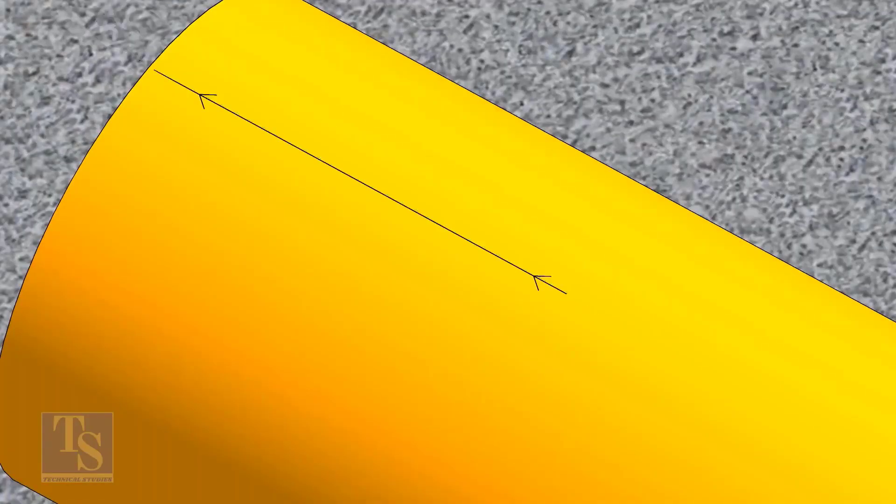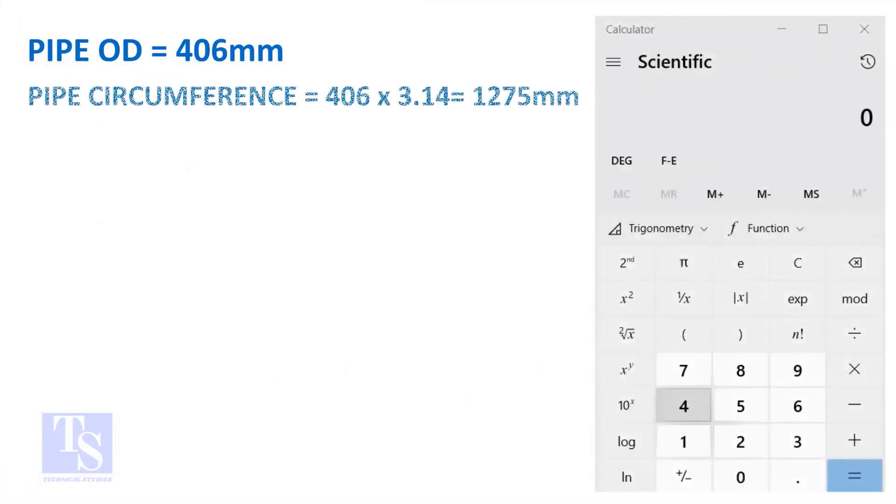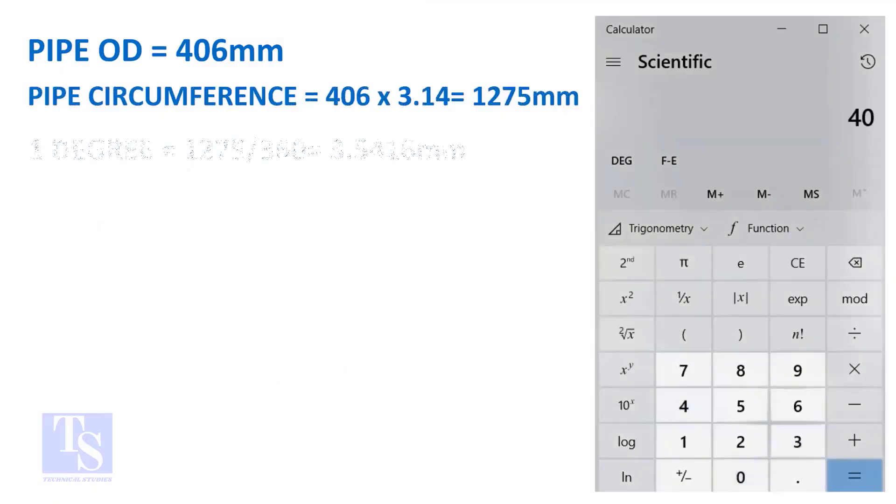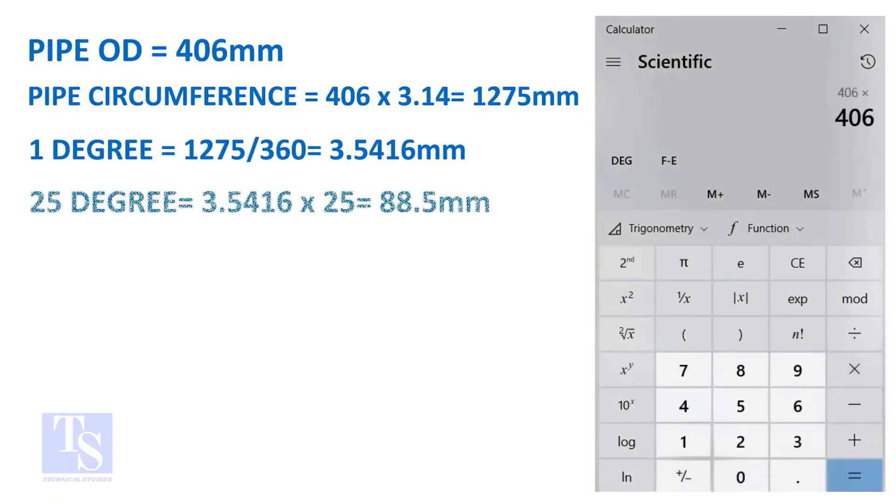Let us calculate the circumferential distance or arc length for 25 degrees. Multiply the OD by 3.14 and you will get the circumference of the pipe. Divide the circumference by 360 and you will get the arc length of 1 degree. Finally, multiply the 1 degree arc length by 25. Now you have the arc length of 25 degrees. You can apply this formula to get the arc length of any degree.